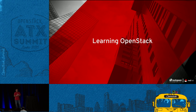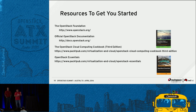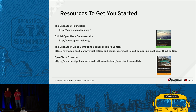Let me talk about some ways you can learn OpenStack. The OpenStack Foundation website is probably the best place to start — it has documentation and videos. There's also the OpenStack Cloud Computing Cookbook written by a couple of Rackspace engineers, which uses Vagrant to spin up a one-node or multi-node environment. OpenStack Essentials is actually the book Dan wrote that does a similar thing — so if you like the workshop today, go buy his book.